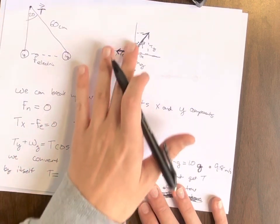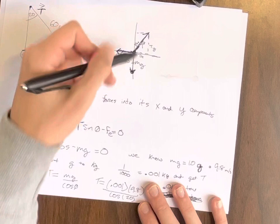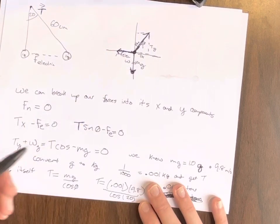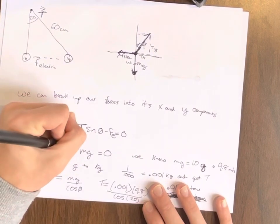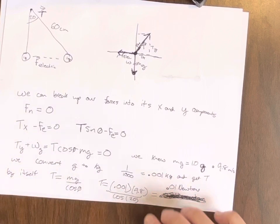And we can do that also in our Y-direction, where our tension Y is cosine plus the weight, mg, will equal zero. So it's tension cosine theta minus mg, which will equal zero.